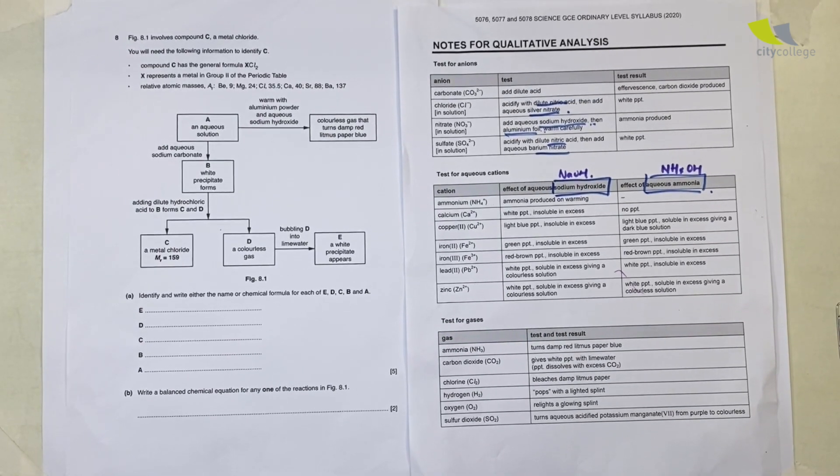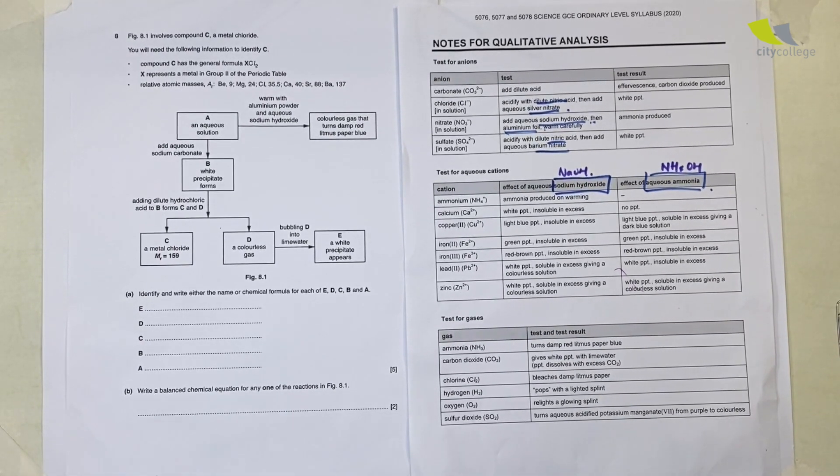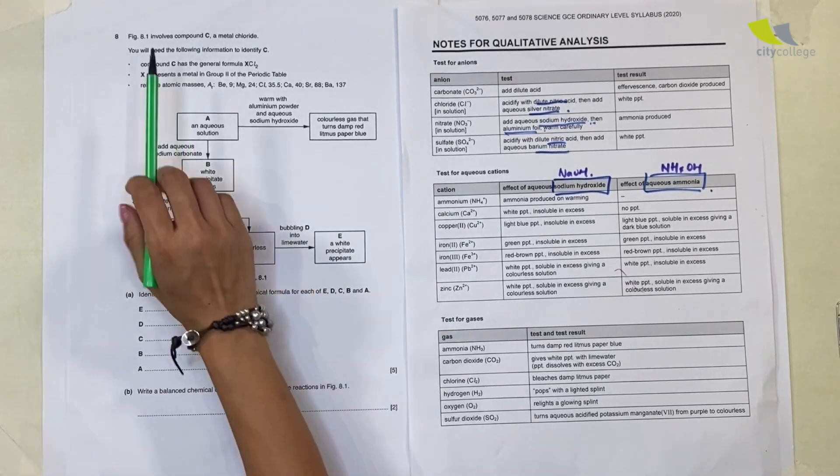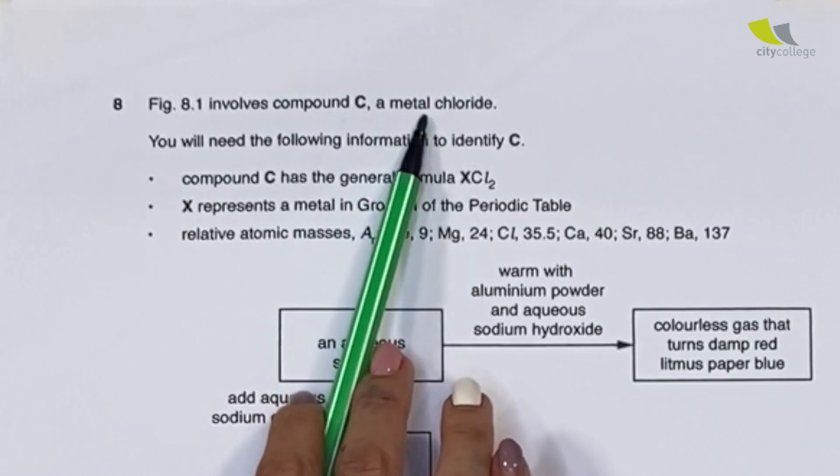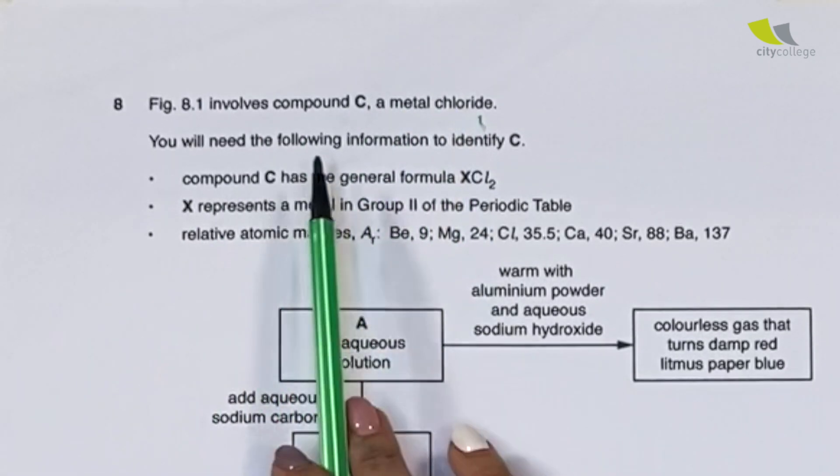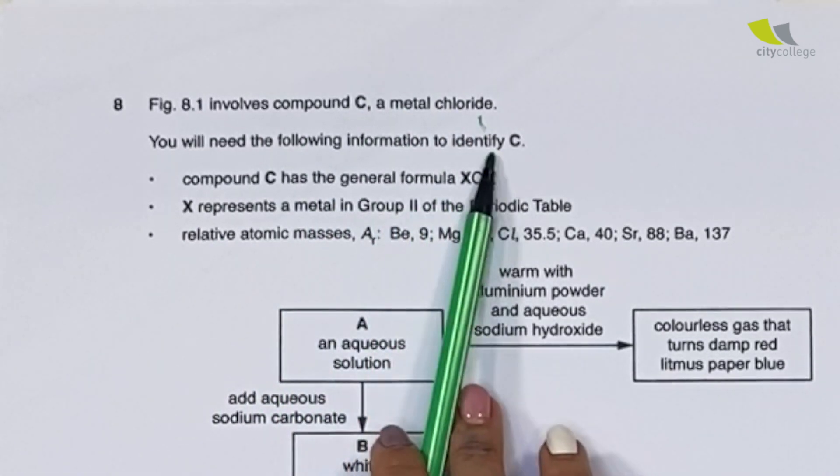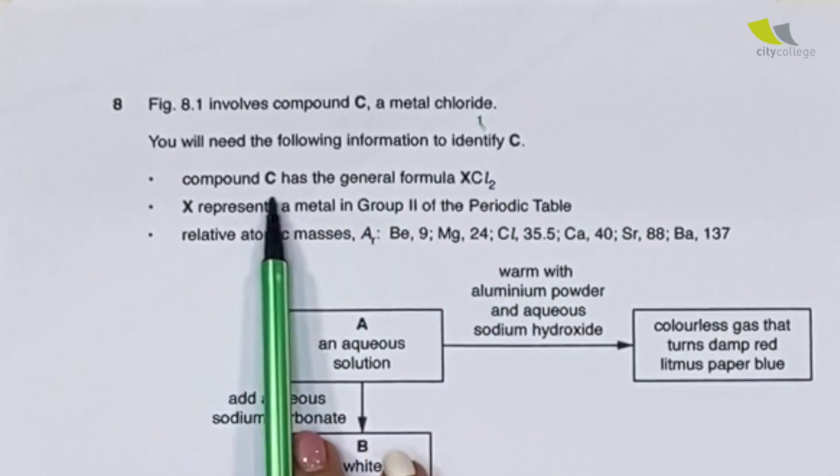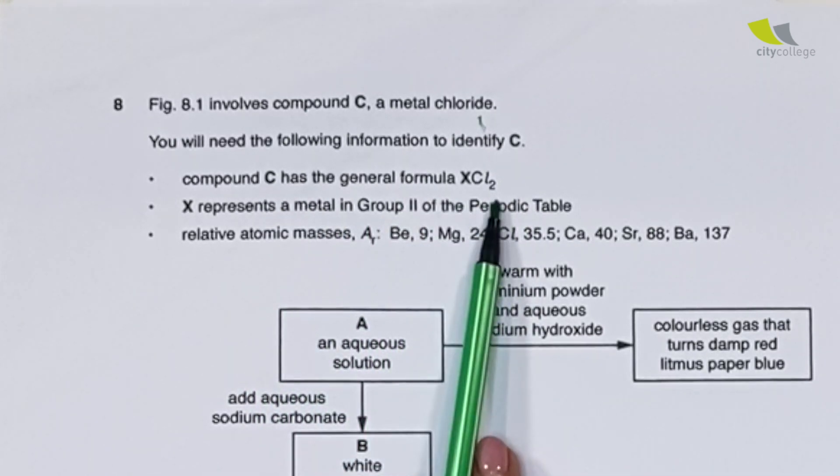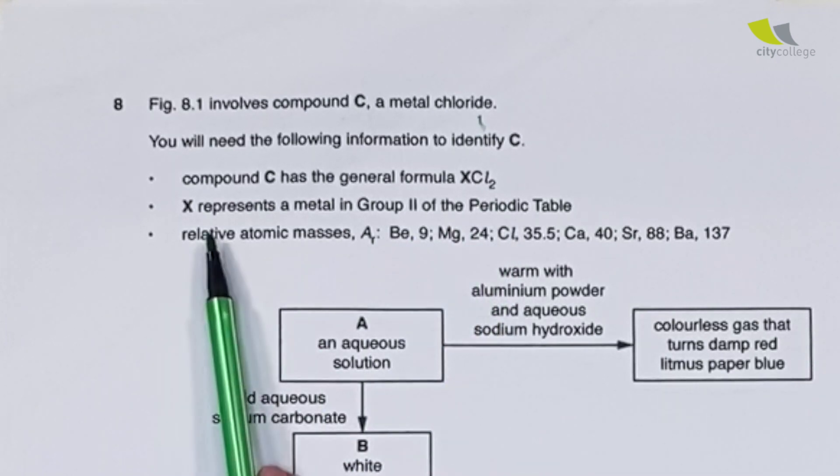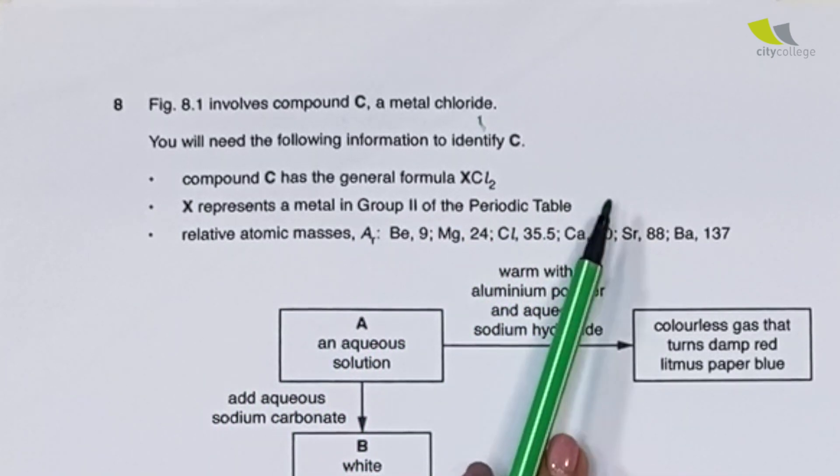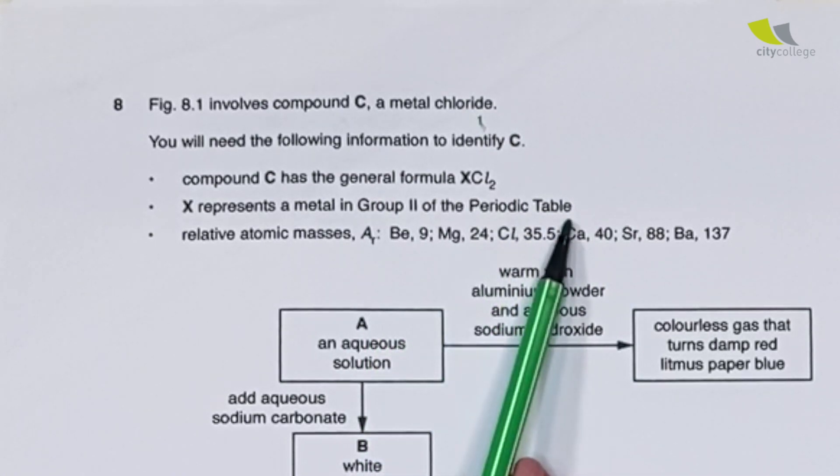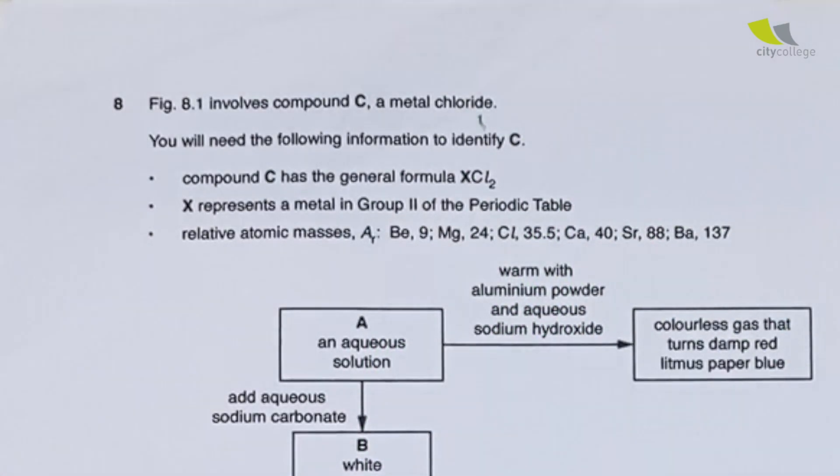Always step one, if you remember: look for the solution followed by the gases. But before that, we always read the question. What did the question say? Figure 8.1 involves compound C, which is a metal chloride. You'll need the following information to identify C. Compound C has a general formula of XCl2, and X represents a metal in Group 2 of the periodic table.